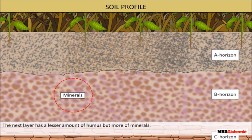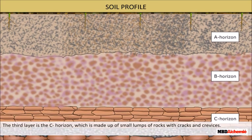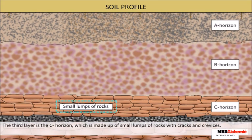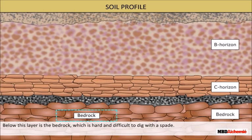The next layer has a lesser amount of humus but more of minerals. This layer is generally harder and more compact and is called the B horizon or the middle layer. The third layer is the C horizon which is made up of small lumps of rocks with cracks and crevices. Below this layer is the bedrock which is hard and difficult to dig with a spade.